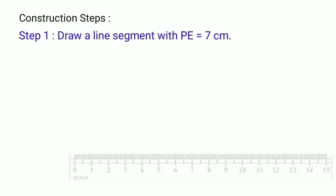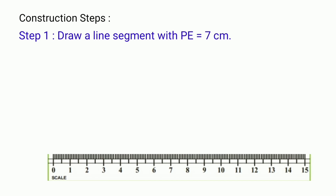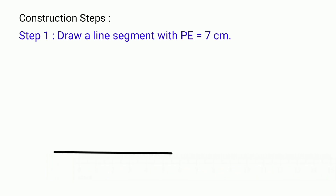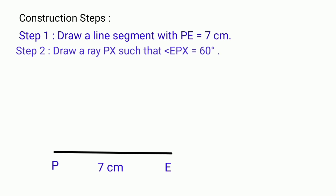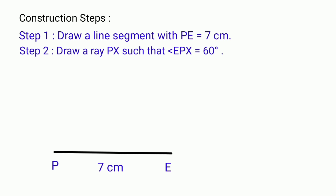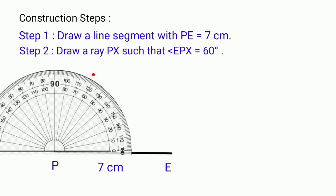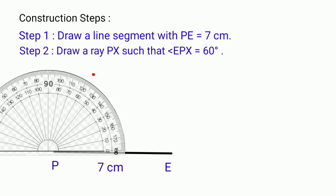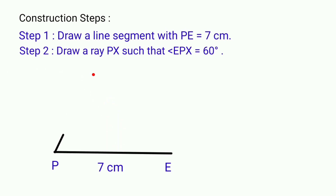Construction steps. Step 1: Draw a line segment PE equal to 7 cm. Step 2: Draw a ray PX such that angle EPX equal to 60 degrees.